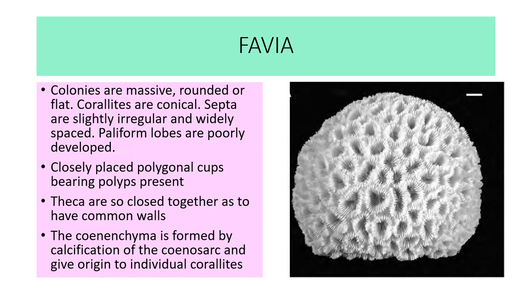Next example is Favia. The colonies are massive, rounded or flat. Corallites are conical. Septa are slightly irregular and widely spaced. Paliform lobes are poorly developed. Closely placed polygonal cups bearing polyps are present. Thecae are so close together as to have common walls. The coenenchyme is formed by calcification of coenosarcs and gives origin to the individual corallites.